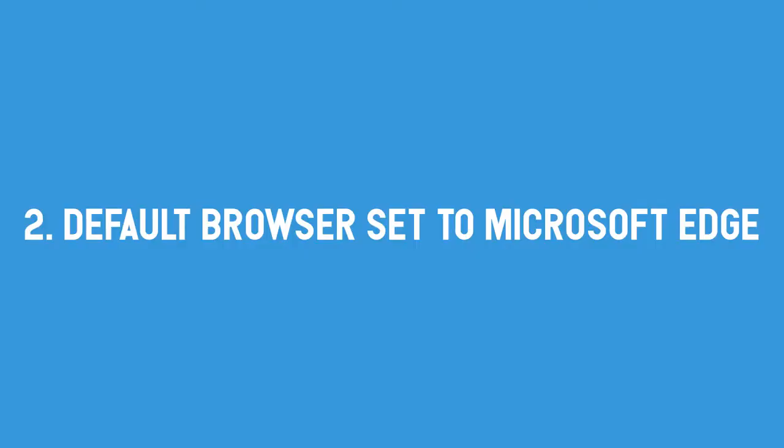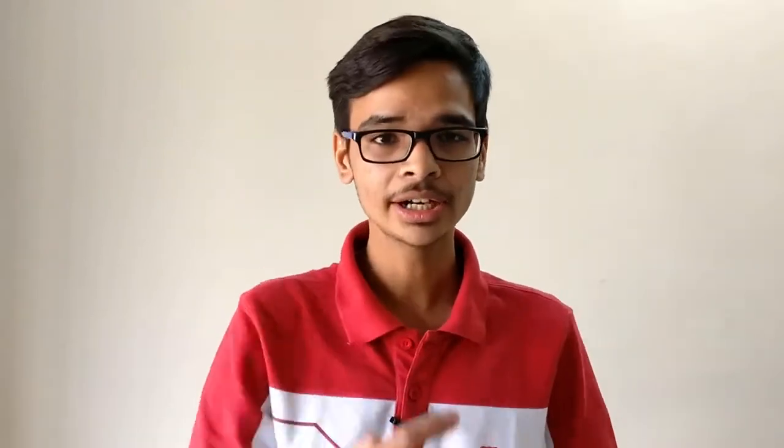Second: default browser. On Windows 10 S, the default browser is set to Microsoft Edge and you can only use Microsoft Edge — which is a bit limiting. Whereas on the other versions, you can configure other browsers like Chrome, Opera, Firefox, etc.